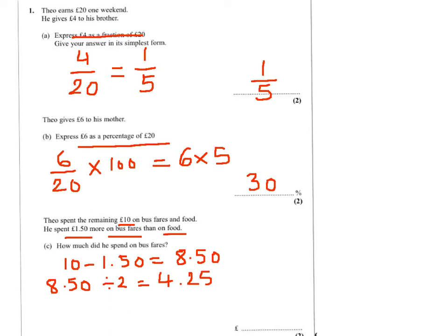But we're told that he spent £1.50 more on bus fares, so I will add £4.25 and £1.50, the extra bit, which gives us £5.75. And this is what he spent on bus fares.